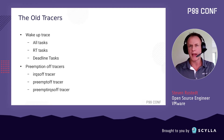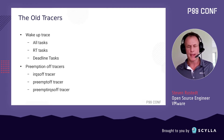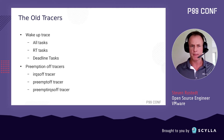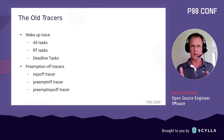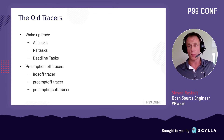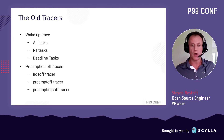Let's look at the old tracers from around 2008. Ftrace came from the real-time patch, so there was a lot of emphasis on latency tracing. Back then we called them plug-ins; today we call them tracers. We have the wake-up latency tracer, which traces the time from when a task wakes up to when it actually runs. There are three kinds: all tasks, RT tasks, and deadline tasks.